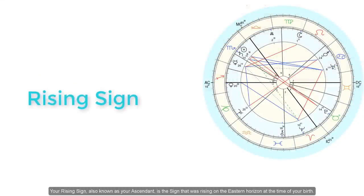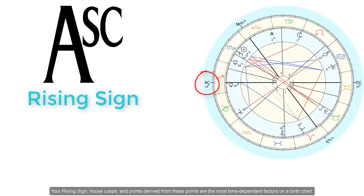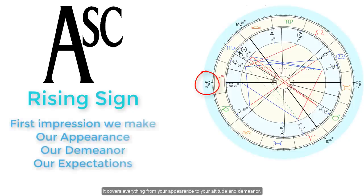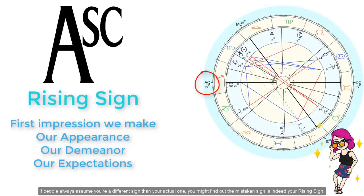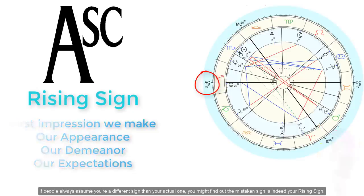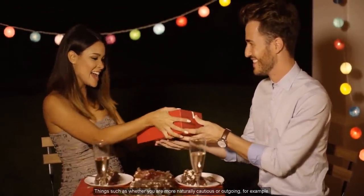Your rising sign, also known as your ascendant, is the sign that was rising on the eastern horizon at the time of your birth. If you know the time you were born, your rising sign can be calculated to the exact degree. Your rising sign, house cusps, and points derived from these are the most time-dependent factors on a birth chart. Your rising sign defines, in part, the first impression we make on others — it covers everything from your appearance to your attitude and demeanor, and is commonly referred to as the mask we wear in public. If people always assume you're a different sign than your actual one, you might find out the mistaken sign is indeed your rising sign. Your rising sign also represents your expectations of the world around you and your spontaneous reactions, such as whether you are more naturally cautious or outgoing.